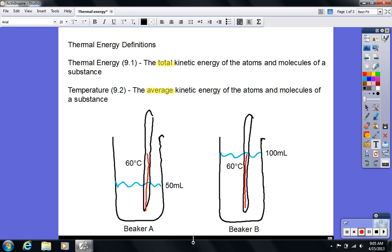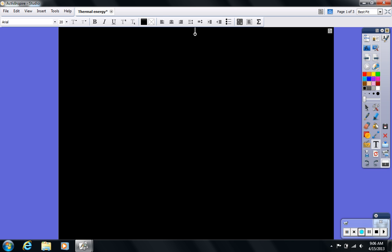Just so you know, calculating the thermal energy is not as simple as simply multiplying 100 milliliters times 60 degrees. But it does give you a sense of how Beaker B would have more total energy than Beaker A. So let's look at some more examples then.